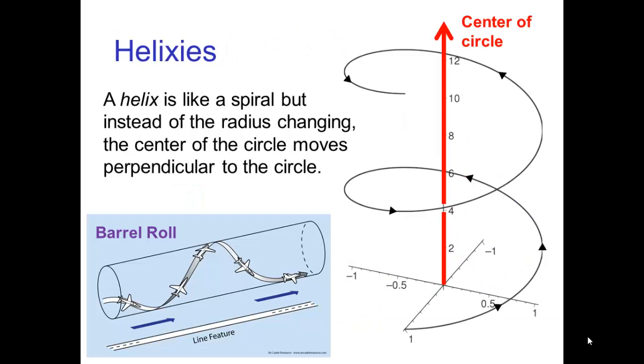A helix is similar to a spiral, but instead of the radius changing, the center of the circle moves perpendicular to the circle.